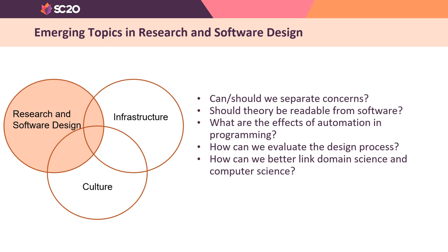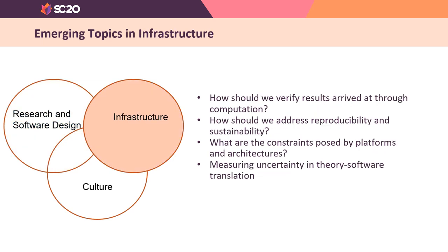Research and software design is concerned with questions like: should theory be readable from software — is that one of the goals? What are the effects of automation and programming? Infrastructure is concerned with topics like whether we should address reproducibility and sustainability, and what constraints are posed by platforms and architectures.